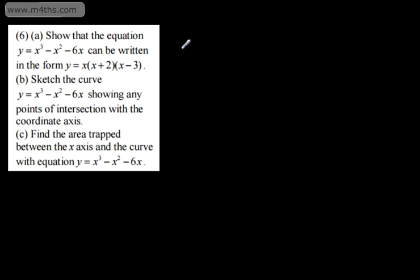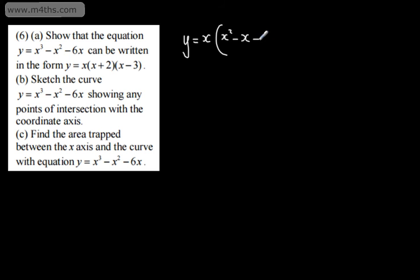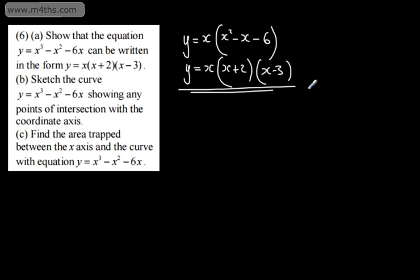In question 6a, it says show that y = x³ - x² - 6x can be written in the form y = x(x + 2)(x - 3). Taking the common factor of x out, we get x multiplied by the quadratic x² - x - 6. Factoring the quadratic gives y = x(x + 2)(x - 3), and that is what we end up with.